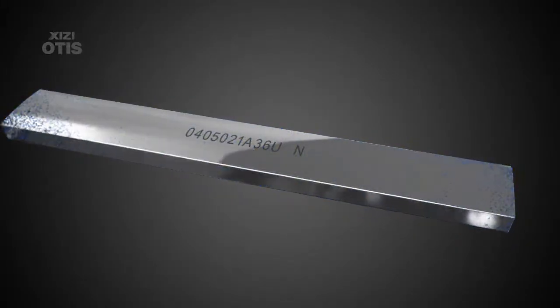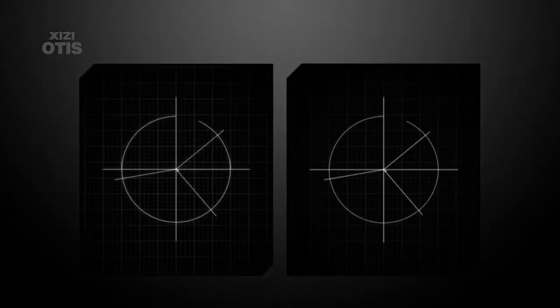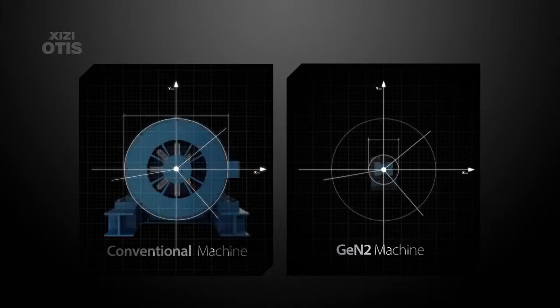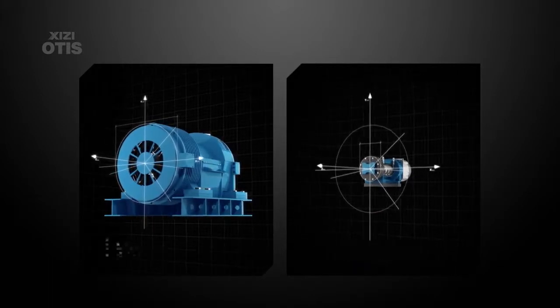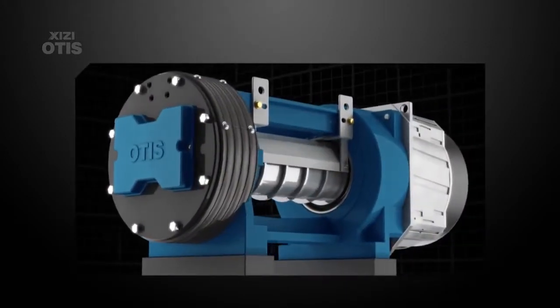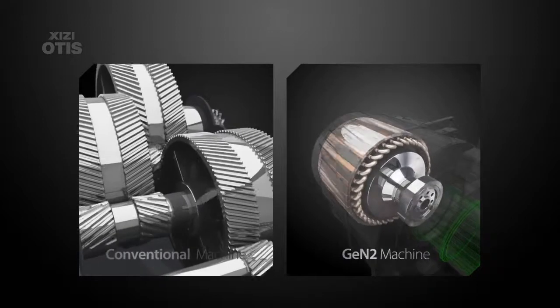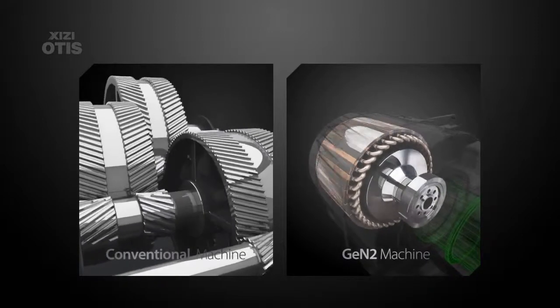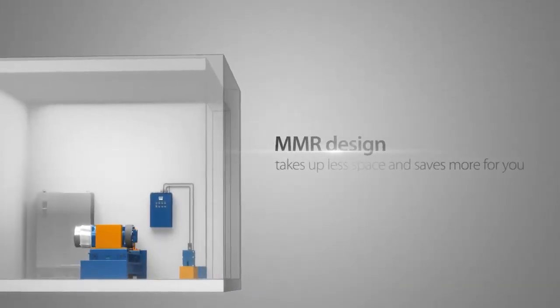Thanks to its flexible belts, the Jintu machine has a smaller sheath, which allows for a machine 70% smaller and up to 50% more efficient than conventional geared machines. Mini machine room design takes up less space and saves more for you.